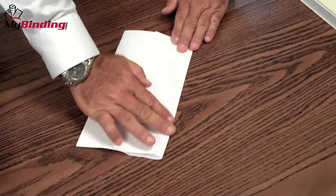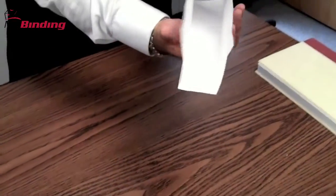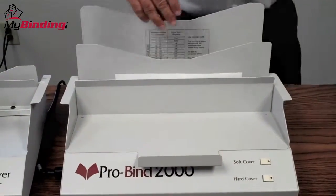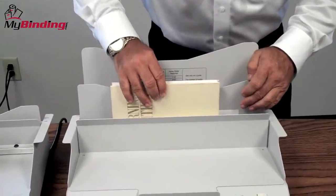Additionally, you can take a regular piece of paper and fold it into thirds, making a little trough. Set that down inside the ProBind 2000, the book inside the paper, and that will clean up any spills that might happen.